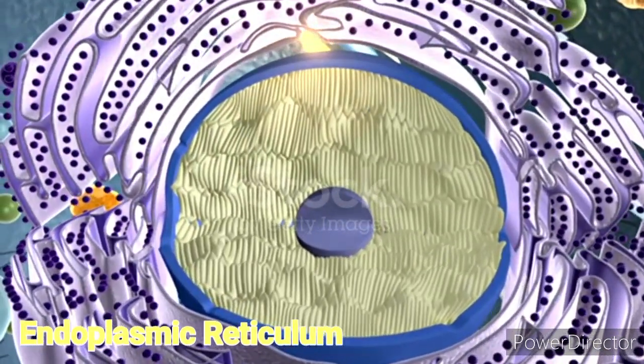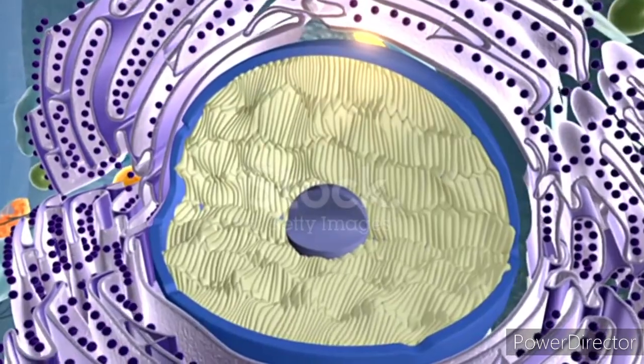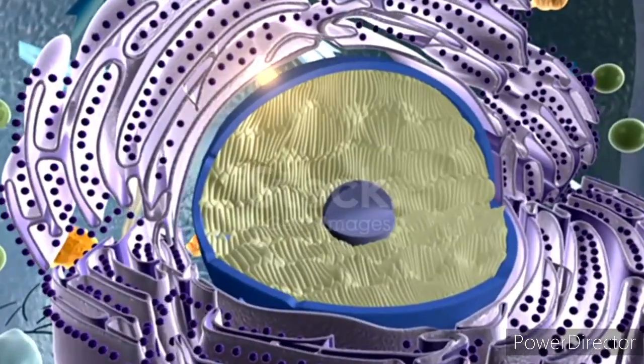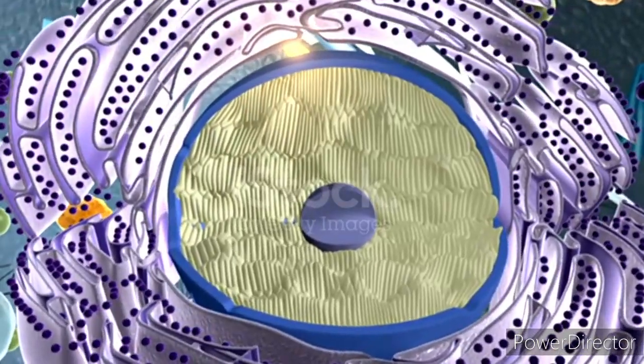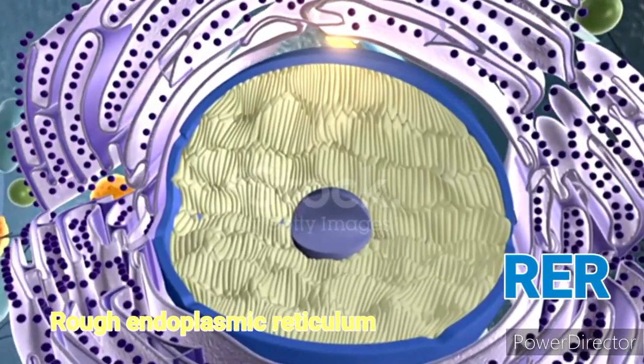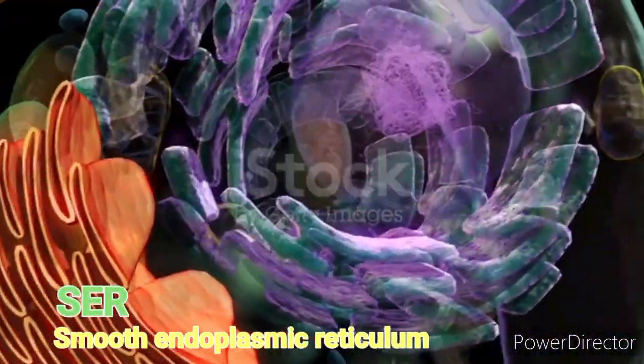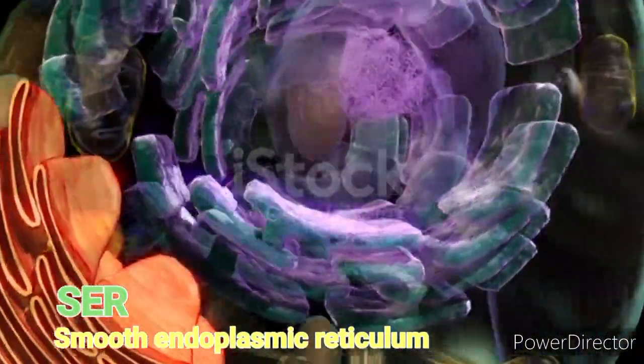The endoplasmic reticulum, or ER, is a complex network of membranes found in eukaryotic cells, consisting of two main types: rough endoplasmic reticulum (RER) and smooth endoplasmic reticulum (SER). Here are key details about the ER.